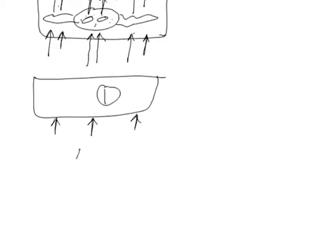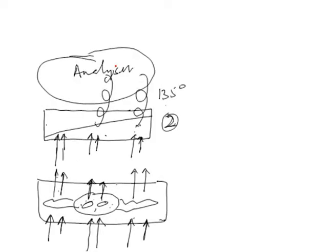As the sheared rays move through the condenser and specimen, they are spatially displaced and not allowed to interfere. The shear distance is around 0.2 micrometers or less; as you decrease the shear distance you increase the resolution. Once they pass through the specimen, there is differential retardation due to thickness and refractive index. This light is then combined by prism number two into elliptically polarized light at 135 degrees.